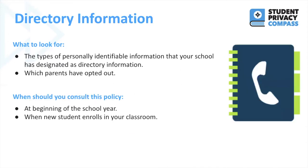Your school will also have a policy on directory information that will state the types of personally identifiable information your school has designated as directory information. Directory information is student information that would not generally be considered harmful or an invasion of privacy if disclosed to others. Typically, directory information includes student names, address, telephone, date and place of birth, participation in activities and sports, or dates of attendance. Schools may disclose directory information to third parties without consent, as long as families know what information is considered directory and have the time to opt out.